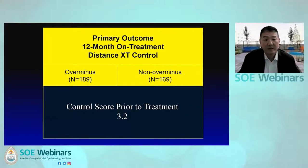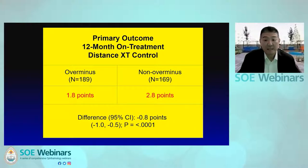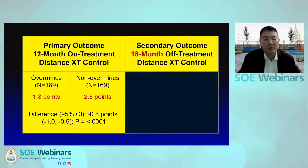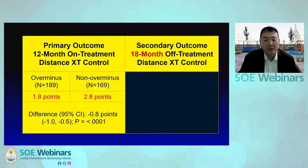Study visit completion was excellent in both groups, and based on parental report, spectacle compliance at 12 months was 76% in both treatment groups. So what did we find? The control score was 3.2 in both groups prior to enrollment. In the over-minus group it improved to 1.8; however, in the non-over-minus group it remained at 2.8, and this was statistically significant. However, the improvement in intermittent exotropia control in the over-minus group dissipated once the over-minus correction was weaned off, down to 2.4.